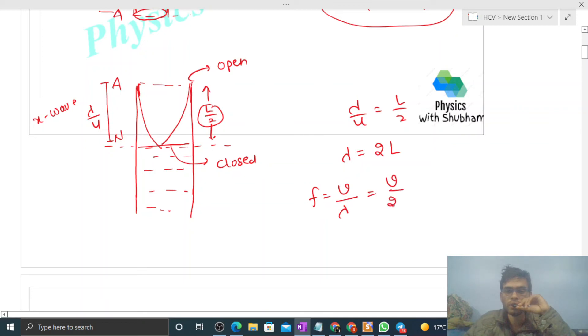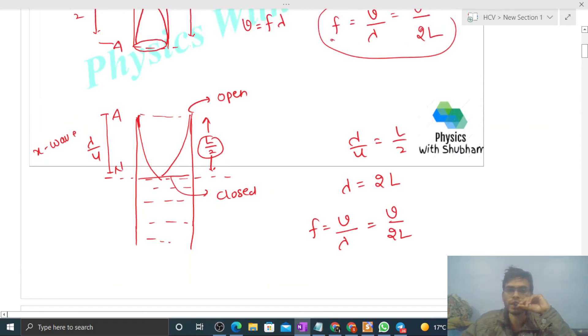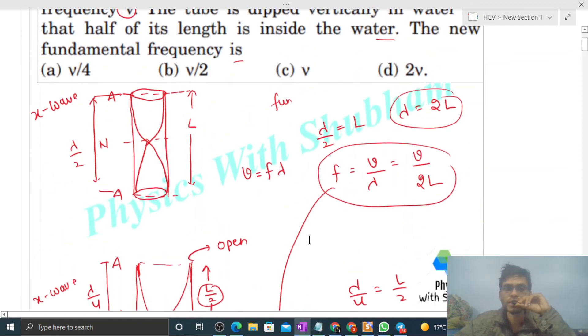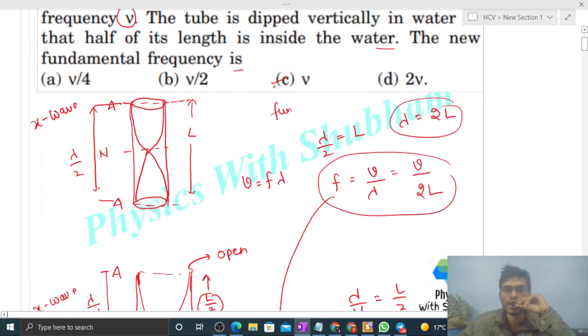So you can see frequency in both cases is the same. So frequency does not change. You can see initially if it was ν, then finally it will also remain the same. So I think you have understood.